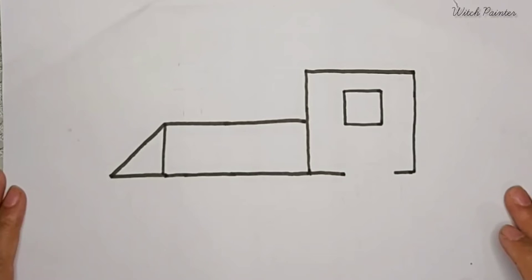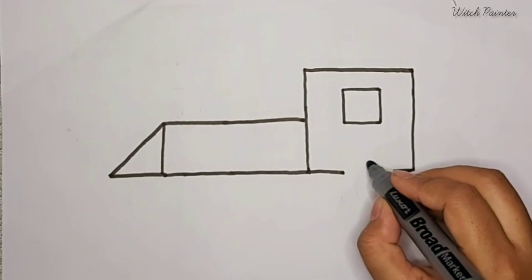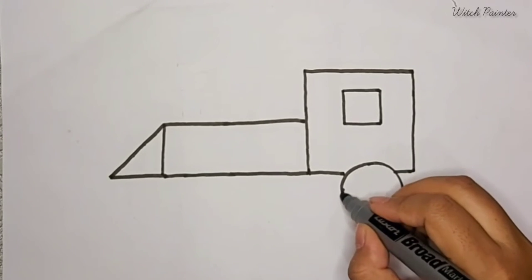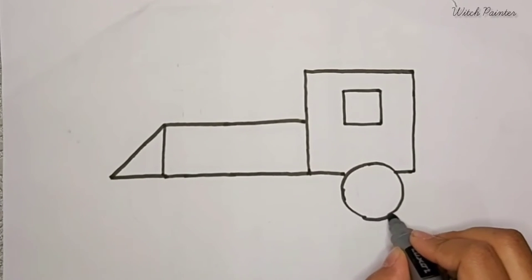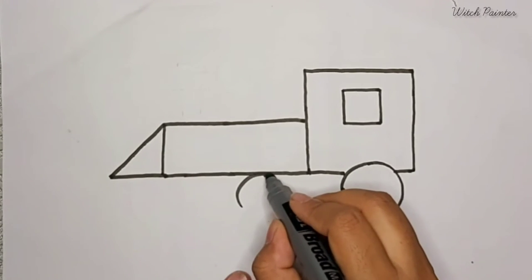Now you will add some circles for the wheels - one big circle and two small circles.